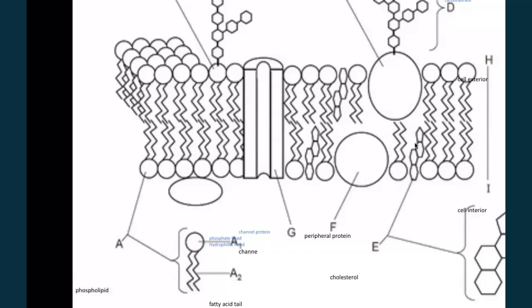C is a glycoprotein. This is the protein portion, this is the glyco portion, and D is a carbohydrate.